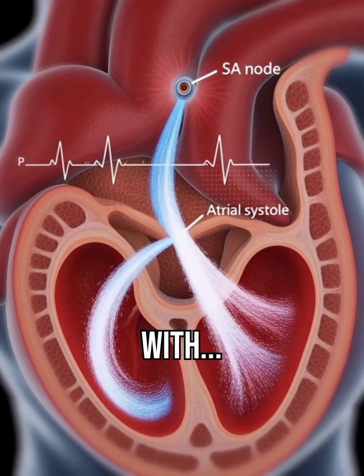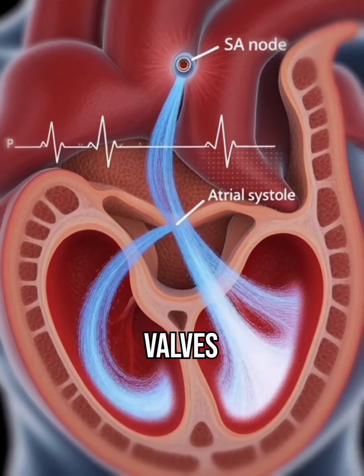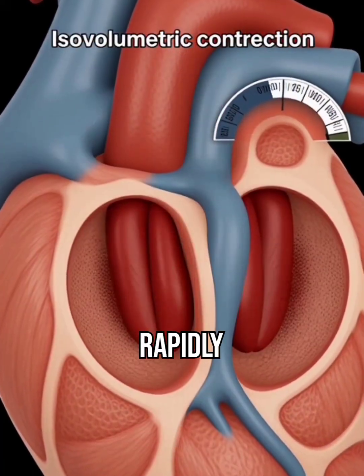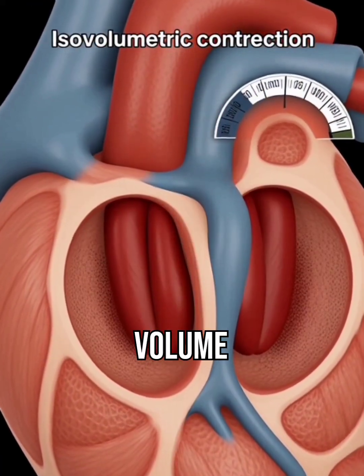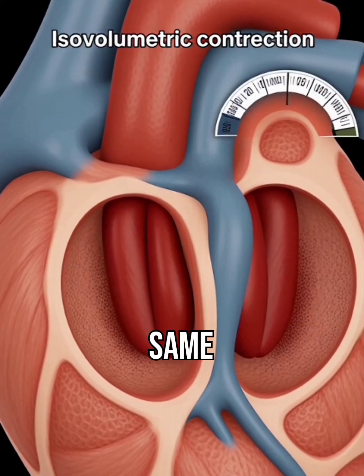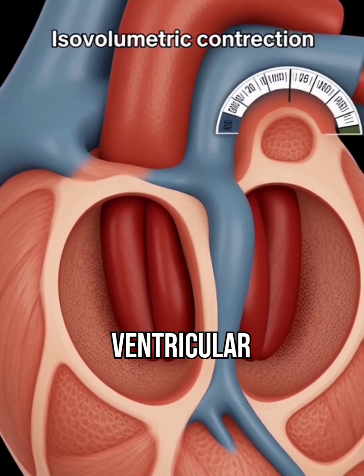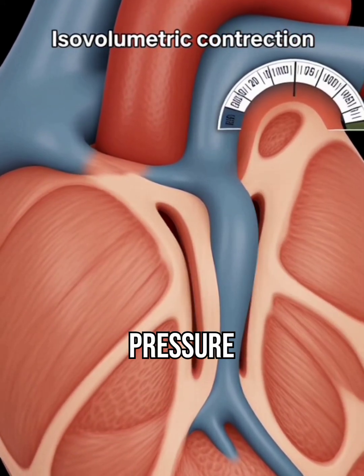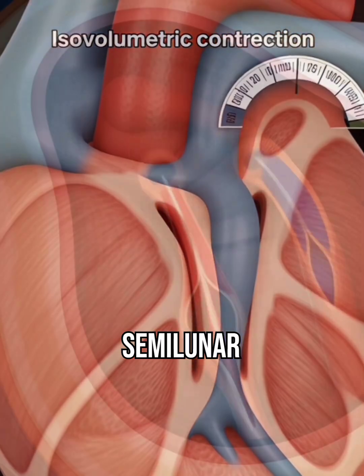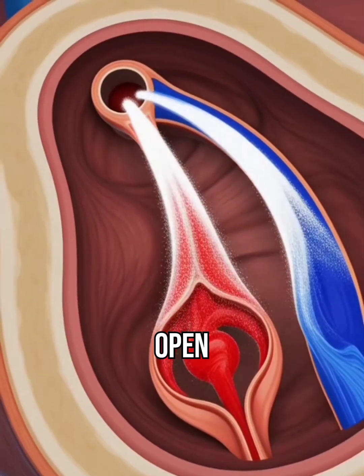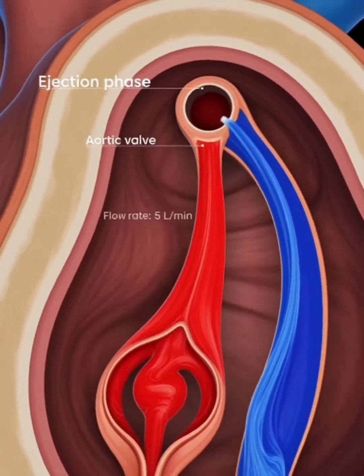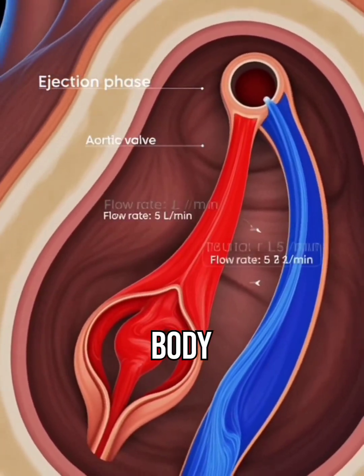Ventricles contract with all valves closed. Pressure rises rapidly while volume stays the same. When ventricular pressure exceeds arterial pressure, the semilunar valves open and blood is forcefully ejected to lungs and body.